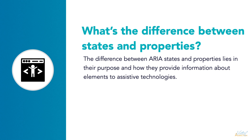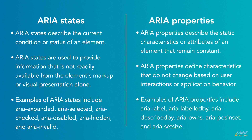The difference between ARIA states and properties lies in their purpose and how they provide information to assistive technologies. ARIA states describe the current condition or status of an element, indicating whether an element is in a particular state at a given time. States are typically dynamic and can change as user interactions or application behavior occur. ARIA states are used to provide information not readily available from the element's markup or visual presentation alone. Examples include aria-expanded, aria-selected, aria-checked, aria-disabled, aria-hidden, and aria-invalid.